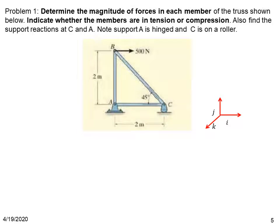Now consider a simple problem of truss analysis. We have a three-member truss as shown in the figure, which is subjected to an external load of 500 newton at point B. The distance AB is two meters and the distance AC is two meters. The angle between AC and BC is 45 degrees. The question is: find the magnitude of forces in each member and state whether the member is in tension or compression.